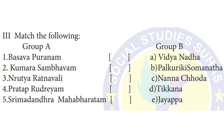Match the following — Group A (Writer's Names) matched with Group B. First: Palkuriki Swamnath. Second: Kumar Sambhav written by Chodudu. Third: Nritya Rathravali book was written by Jayapasanani. Fourth: Pratapurudrayam book was written by Vidyanaaddu. Fifth: Shri Madhraandra Mahabharatam book was written by Thikkana.